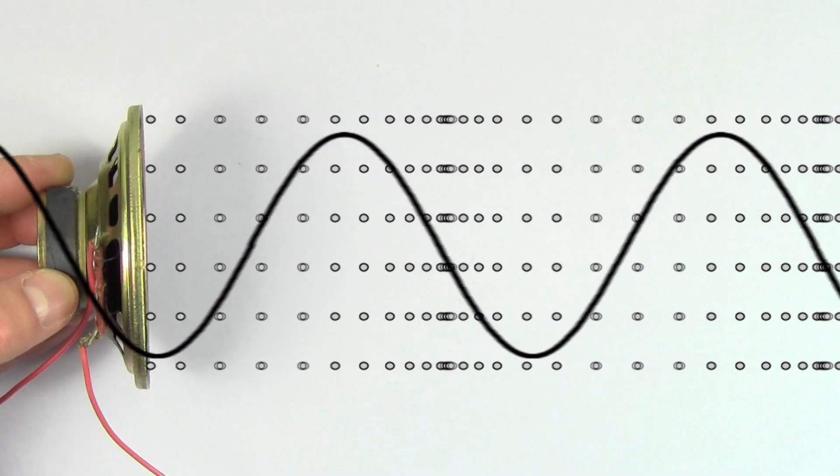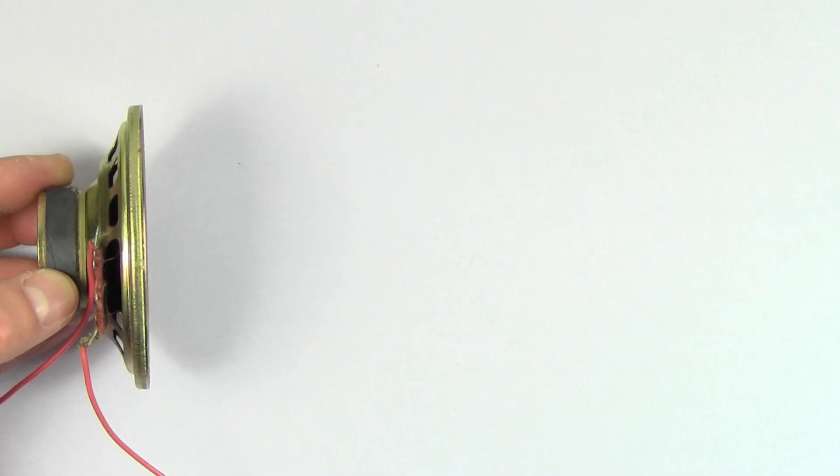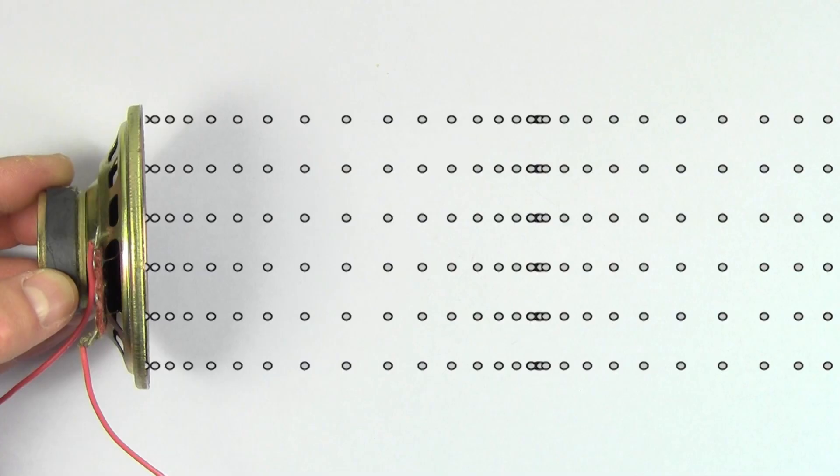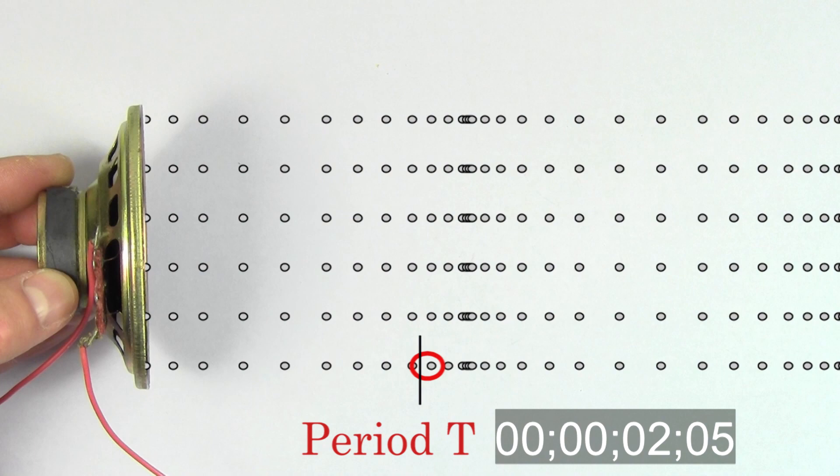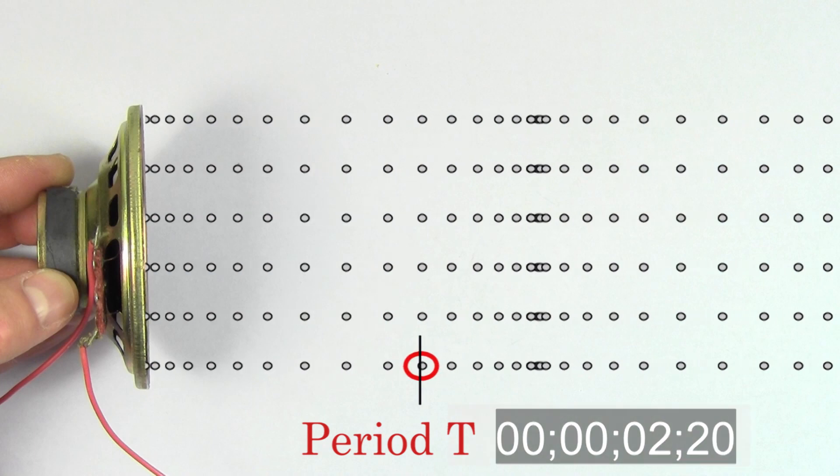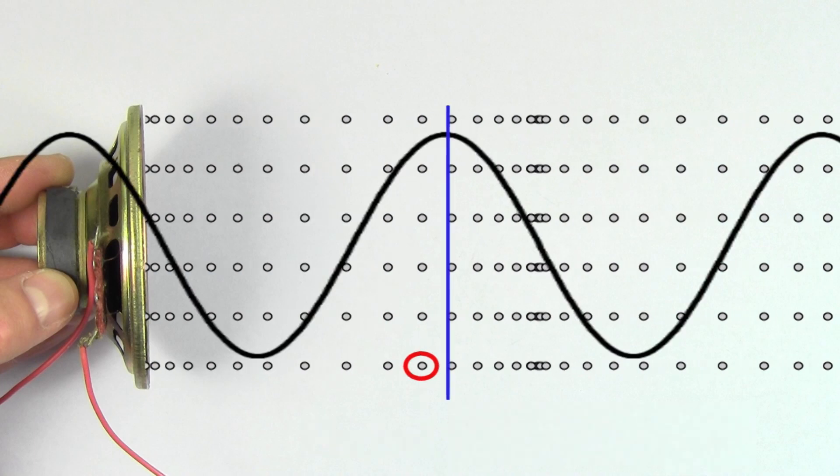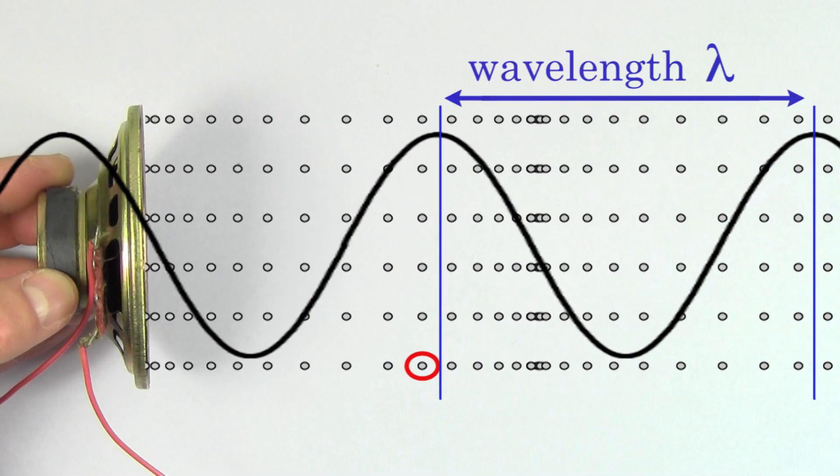To figure out a formula for the velocity of a sound wave, let's look closely at what's happening here. Watch one of the air molecules. It takes one period for this molecule to move back and forth through a full cycle. During this time, the wave shape has moved forward one complete wavelength.